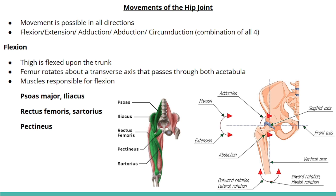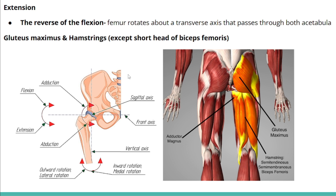The hip joint is very mobile and movement is possible in all directions: flexion, extension, abduction, adduction, and circumduction. In flexion, the femur rotates about a transverse axis passing through both acetabula. Muscles responsible for flexion are iliopsoas, iliacus, rectus femoris, pectineus, and sartorius. Extension is the reverse of flexion around the same axis, and the responsible muscles are gluteus maximus and the hamstring muscles, except the short head of biceps femoris.